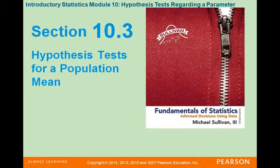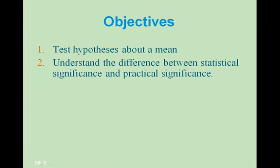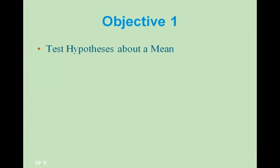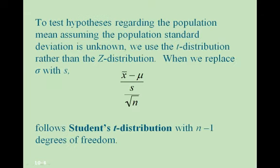Section 10.3: Hypothesis Tests for a Population Mean. To test hypotheses regarding the population mean, assuming the population standard deviation is unknown, we use the t-distribution rather than the z-distribution. When we replace sigma with s, we have x-bar minus the mean over s divided by the square root of n. This follows the Student's t-distribution with n minus 1 degrees of freedom.